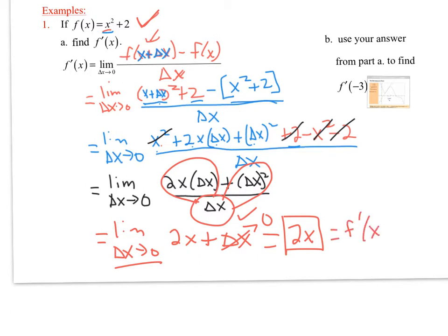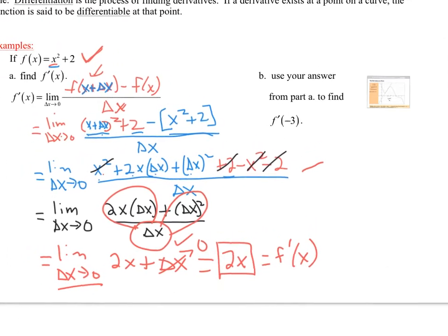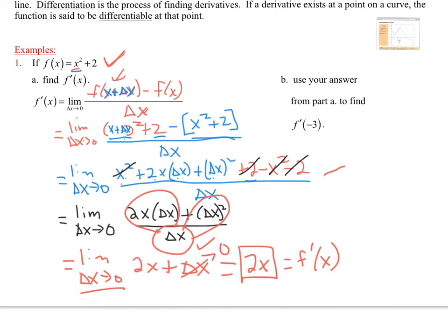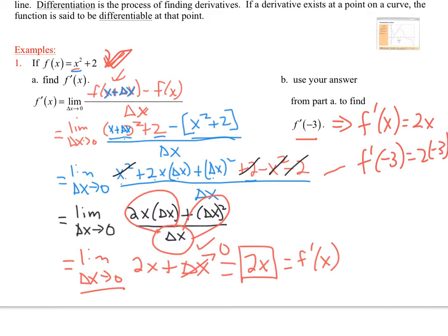We write this as f prime of x = 2x. For part B, we evaluate this derivative at negative 3 — meaning we want the slope of the tangent to this curve at x = -3. Since f prime of x = 2x, we compute f prime of negative 3 = 2 times negative 3, which gives negative 6. That is the slope of the tangent to the curve at negative 3.